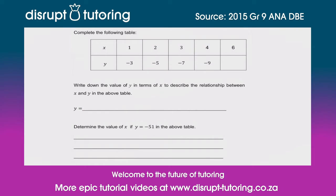So it says complete the table. If we look at our table and try to figure out what type of sequence is here, we can see that we are consistently minusing 2 as we move along. So we know that this difference would also be minus 2, and that would give us negative 11.